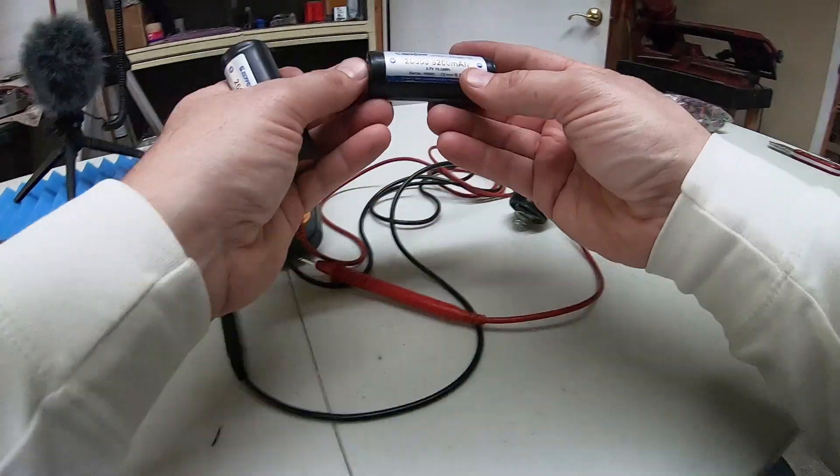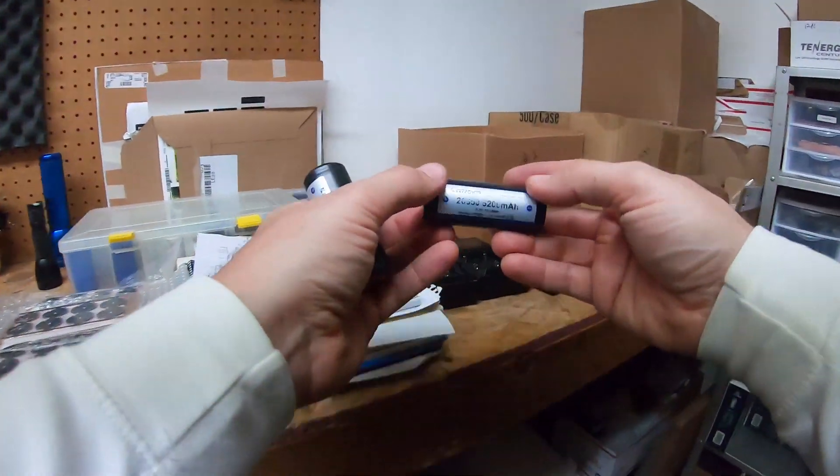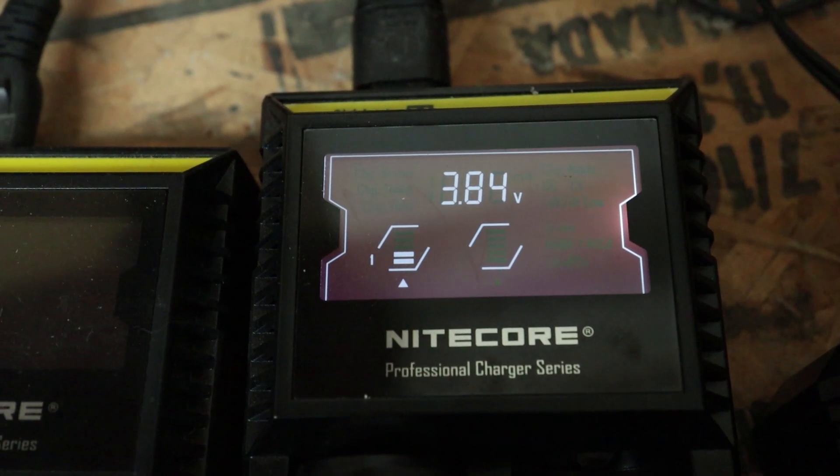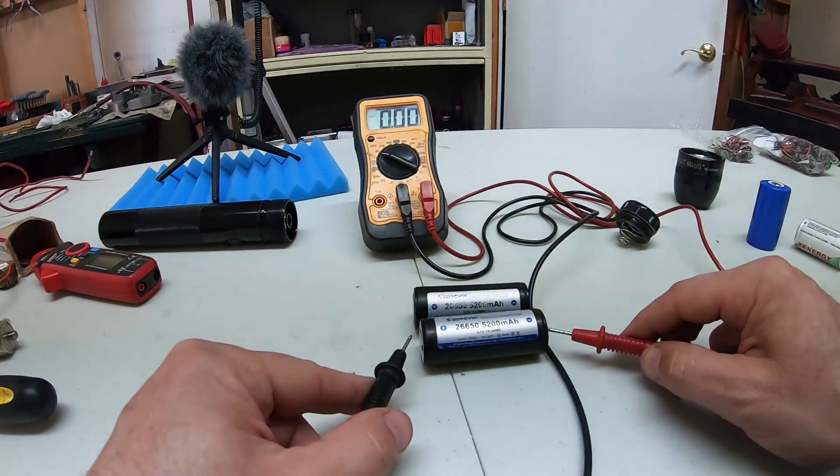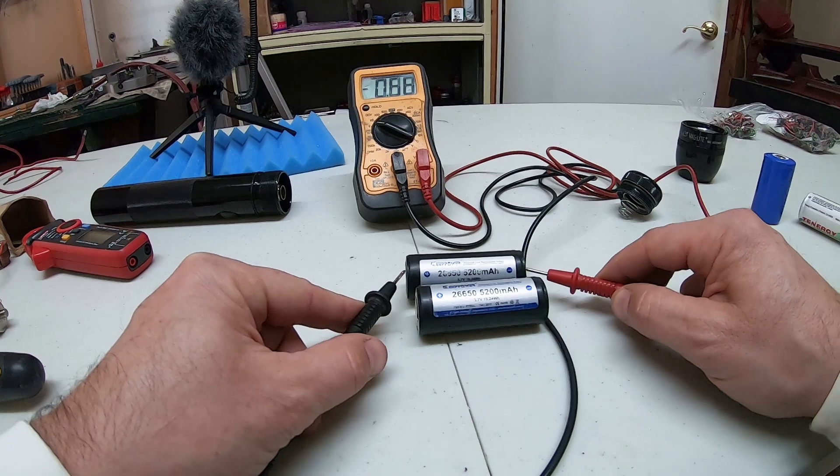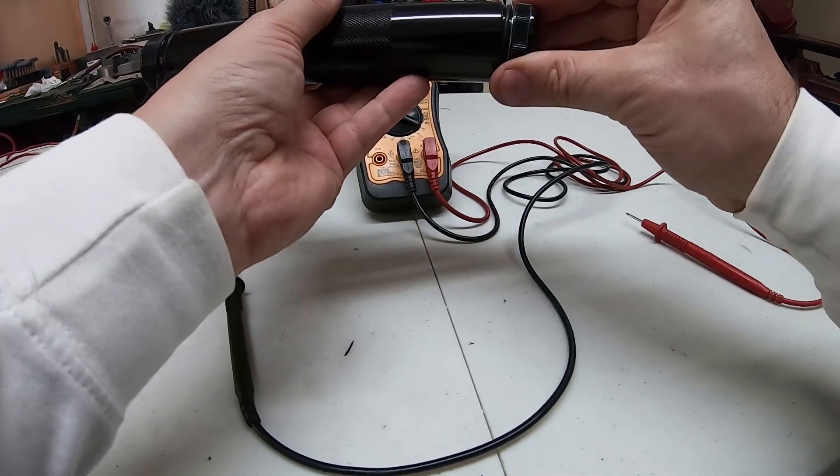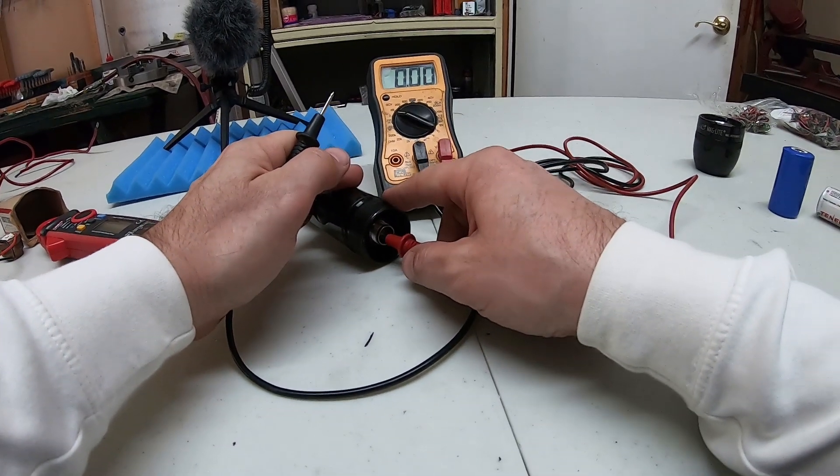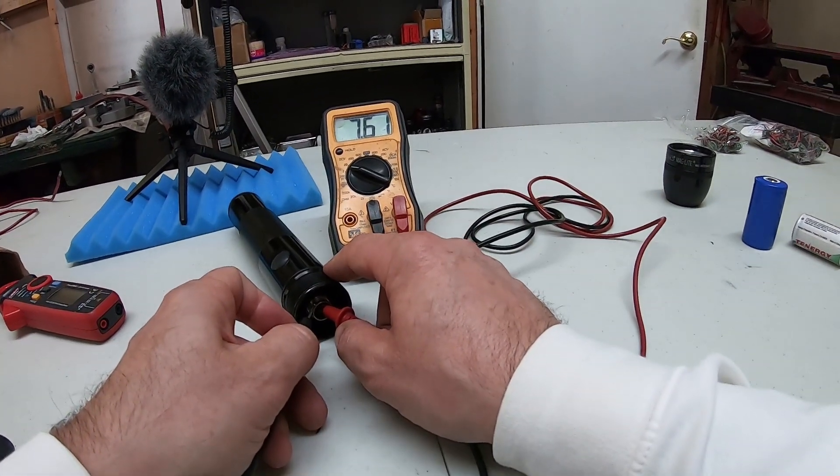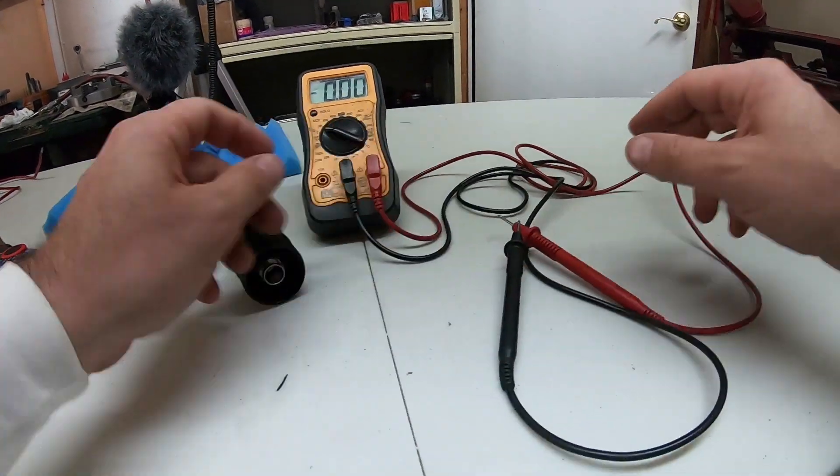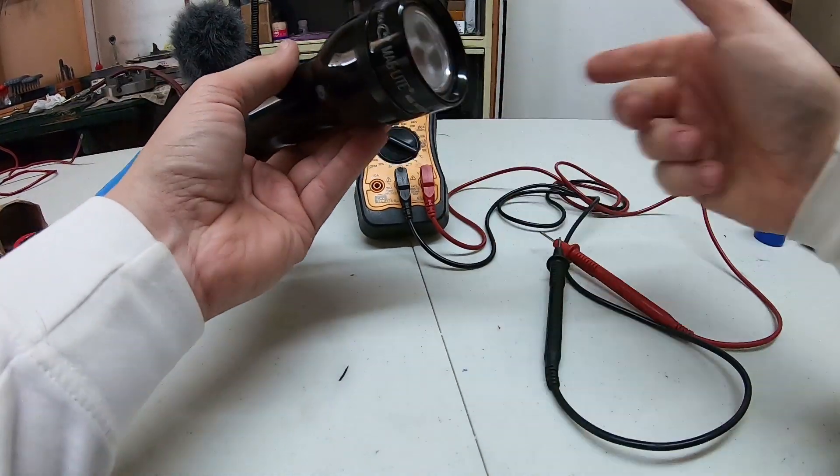The way to fix that is just to pop it back in the charger just for a second. It's all it takes. Now 3.8, 3.8, 7.6 volts. Now when we thread our head on, snug it down, we're golden.